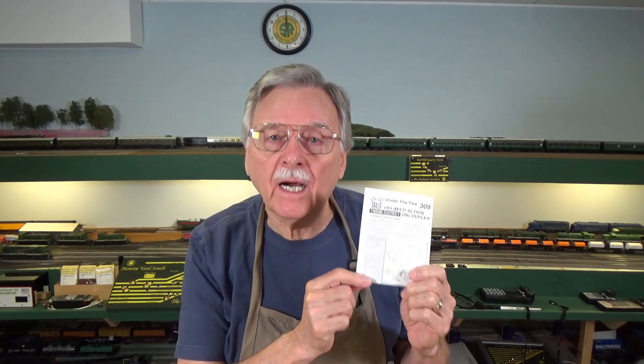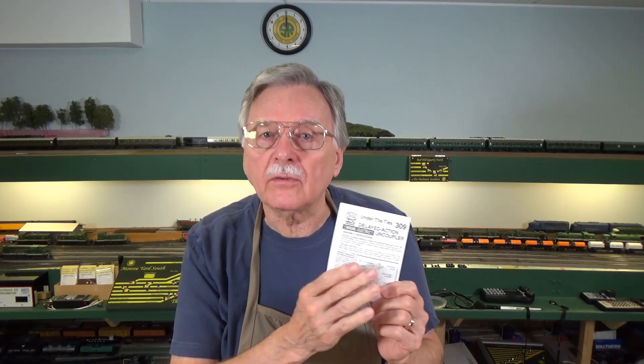Last week we took a look at assembling and installing the KD number 309 electromagnetic uncoupler for use on your model railroad. Let me also point out that in addition to the HO double O scale version, they also make an O scale version and an HON3 version. So if you're interested in those other scales, go ahead and go to the KD website and look up their uncouplers.